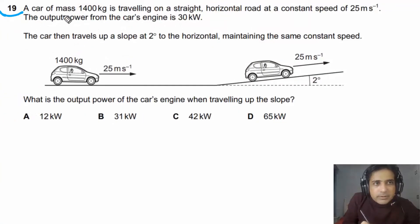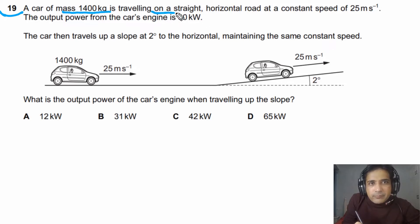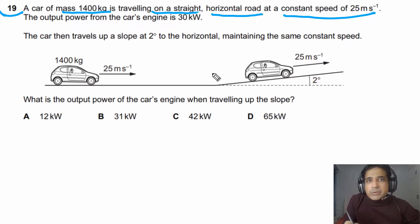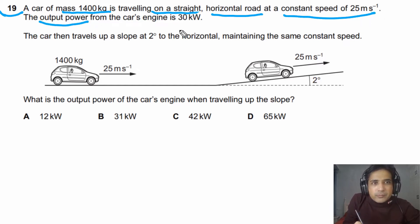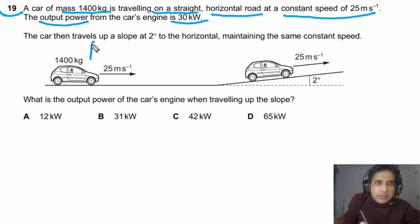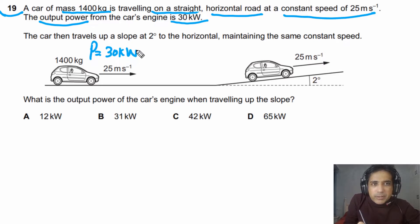For question 19, a car of mass 1400 kilograms is traveling on a straight horizontal road at a constant speed of 25 meters per second. The power output from the car's engine is 30 kilowatts.